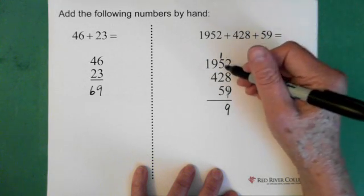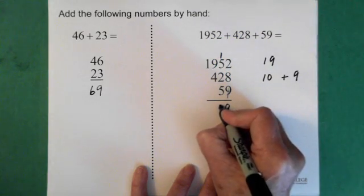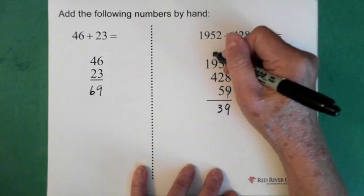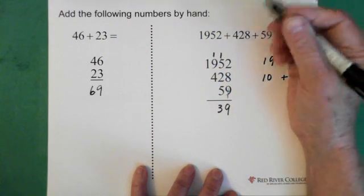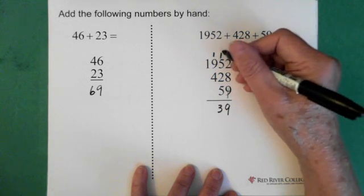Now we add this up. We have 10, 12, 13. So 3 goes down here, and we put a 1 up here. Now we add up this line, and again, that was because we had 13, right?